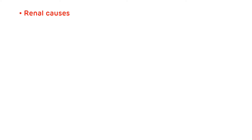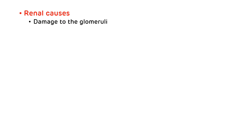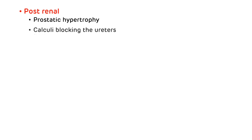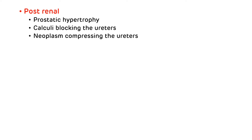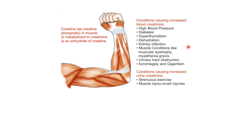The renal cause for increased serum creatinine is damage to the glomeruli. Post-renal causes include prostatic hypertrophy, calculi blocking the ureters, and neoplasm compressing the ureters. This picture shows the conditions causing increased blood creatinine and conditions causing increased urine creatinine.